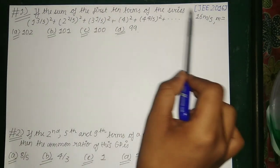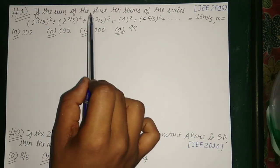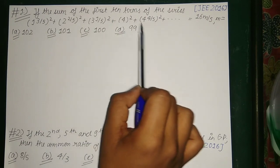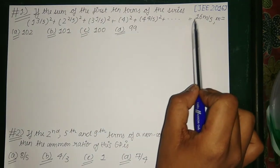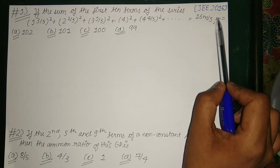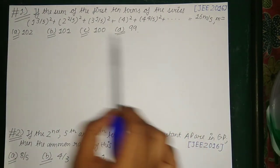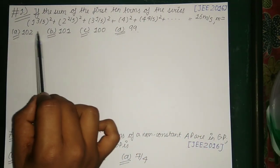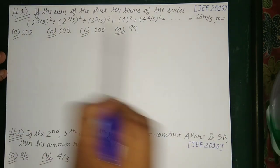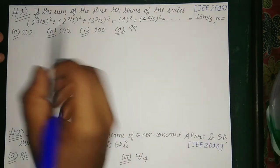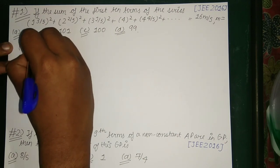If the sum of the first 10 terms of the series (1 3/5)² + (2 2/5)² + (3 1/5)² + 4² + (4 4/5)² till the 10th term is equal to 16m/5, then the value of m — we have 4 options: option A: 102, option B: 101, option C: 100, and option D: 99.